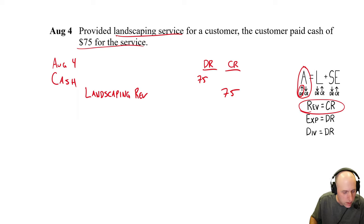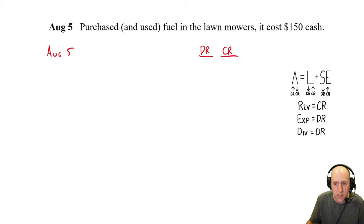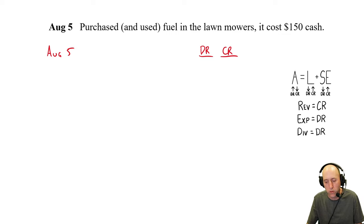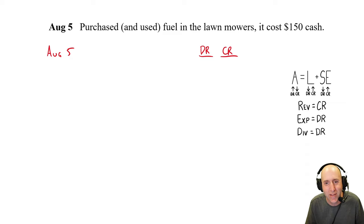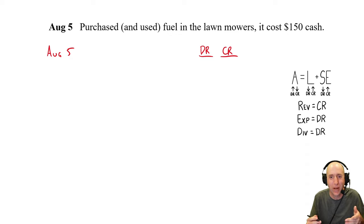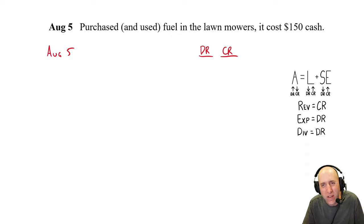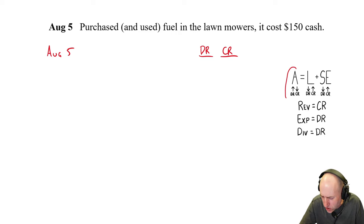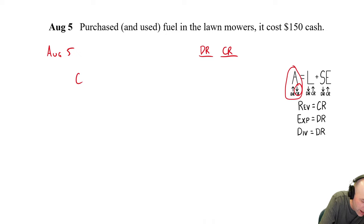August 8th: purchased a new piece of landscaping equipment — a line trimmer — for $500 on account. Did cash change hands? No, because it was on account. We got a piece of equipment, which is an asset that is increasing, so we debit equipment $500. Since we didn't pay, we credit accounts payable $500 — just like the phone bill. Our accounts payable increases because I didn't owe the equipment company anything yesterday and now I owe them $500.